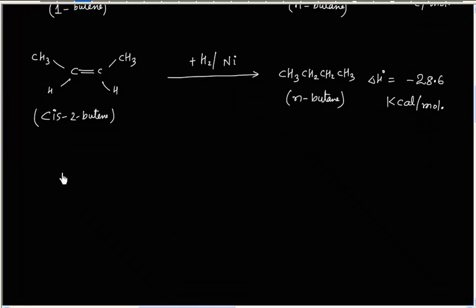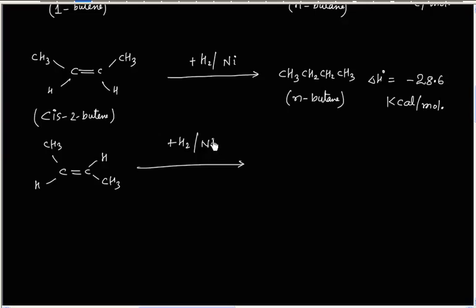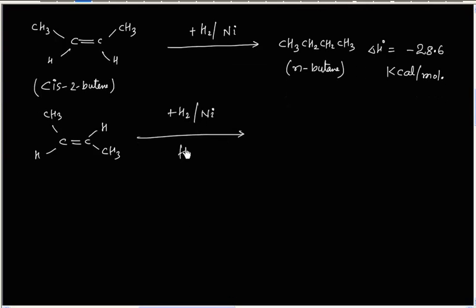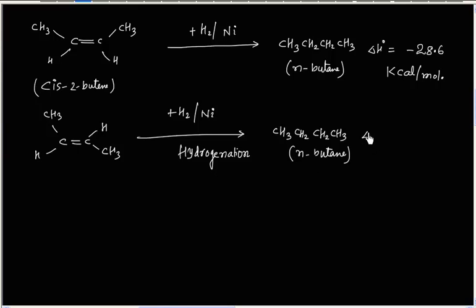Similarly, we can do hydrogenation of trans-2-butene. In the presence of nickel, we add hydrogen and once again get normal butane as the product. The double bond gets hydrogenated, and in this case the heat of hydrogenation value is minus 27.6 kilocalorie per mole. This value comes from experiment.